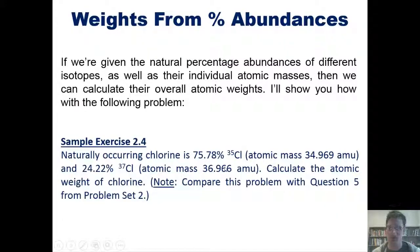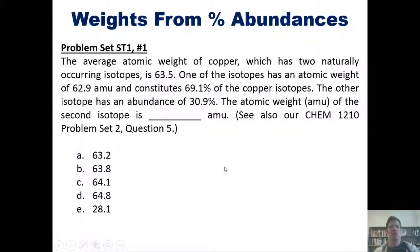That takes us to some final percent abundance questions. The first one says, the average atomic weight of copper, which has two naturally occurring isotopes, is 63.5. One of the isotopes has an atomic weight of 62.9 and constitutes 69.1% of the copper isotopes. The other isotope has an abundance of 30.9%. The atomic weight, or amu, of the second isotope is what?